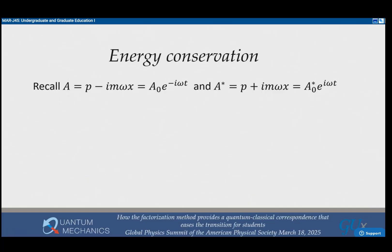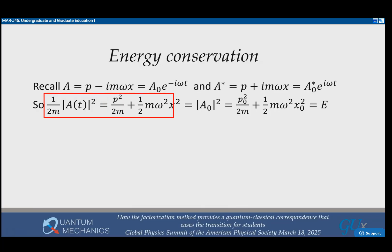You can get energy conservation as well. If you multiply A times A star, from the definition of A it's P squared over 2M plus one half M omega squared X squared. From the solution it's mod A zero squared, because E to the i omega T and E to the minus i omega T have a product equal to one. So energy conservation comes in one line.